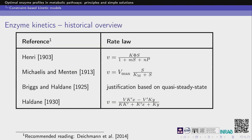A brief history of what these rate law functions look like. A lot of people use the word Michaelis-Menten for everything, but actually you almost should never use their names. Henri was the first to come up with a phenomenological reaction that already looks like the rate law we know. Michaelis-Menten simplified it but also justified it based on a time-separation model — that the equilibrium of the binding is very fast. The people I usually like to cite are Briggs and Haldane, and Haldane later came up with the reversible rate law, which we call reversible Michaelis-Menten, though actually they never did this work.